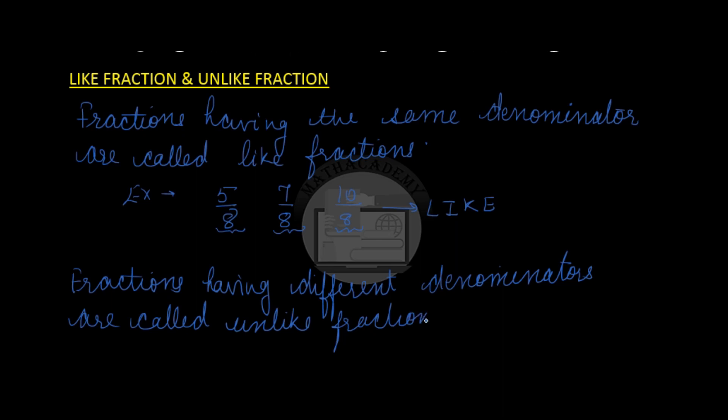Example: 7 by 6, 5 by 8, 3 by 2. All these have got different denominators and therefore all these fractions are unlike fractions.